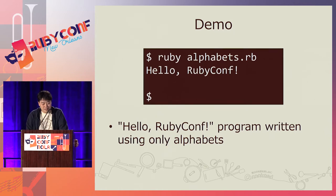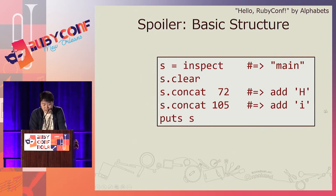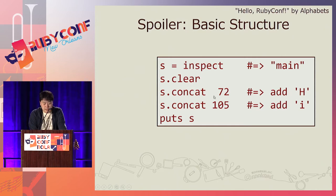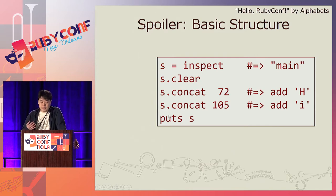Do you need a spoiler? This shows the basic structure of the code. It initializes variable s with any string object and makes it empty using string clear. Then, the same as the previous symbolic Hello World — it concatenates numbers as code points. And finally, this prints it. By replacing the print method with eval, you can easily encode your favorite Ruby program using only alphabets.